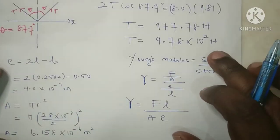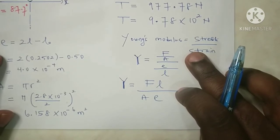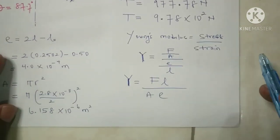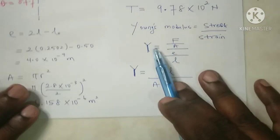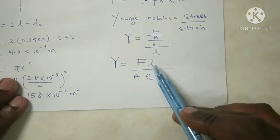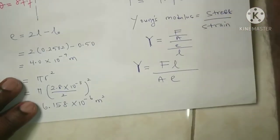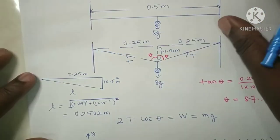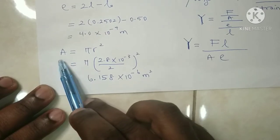Once we have the tension of the wire, we can calculate the Young's modulus using the formula: Young's modulus equals stress divided by strain. Young's modulus Y equals force F times original length, divided by cross-sectional area times extension. The force equals the tension in the wire, and the original length of the wire is 0.5 m. The cross-sectional area A equals πr².